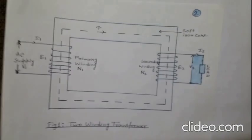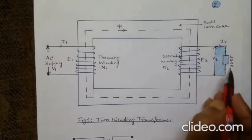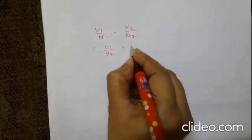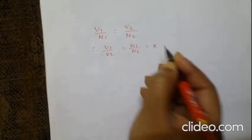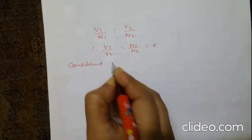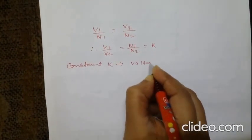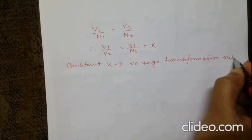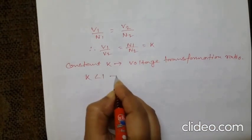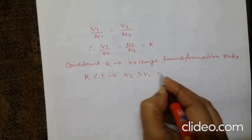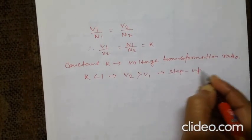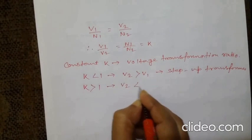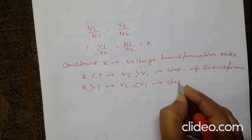We can write V1/V2 = N1/N2 = K, where the constant K is called the voltage transformation ratio. If K is less than 1, then V2 is greater than V1, and it is called a step-up transformer. If K is greater than 1, then V2 is less than V1, and it is called a step-down transformer.